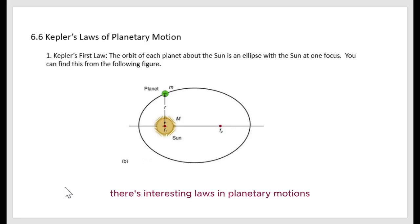There are interesting laws in planetary motions in our solar system. We call these Kepler's three laws. The first law states that the orbit of each planet about the Sun is an ellipse with the Sun at one focus. You can find this from the following figure.